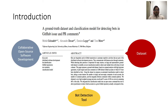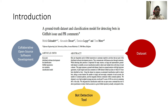First, we need to consider collaborative open source software development. We have many social coding platforms, for example GitHub, enabling collaboration and interaction of developers. However, this interaction and collaboration can be minimal for small projects. For bigger projects, like software ecosystems, it becomes a big problem because there are lots of issues, pull requests, and code discussions going on.